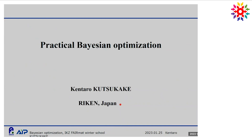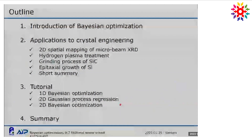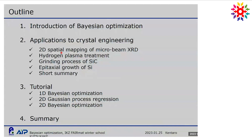Today, I'd like to talk about Bayesian optimization. For the past two days, the professor has explained Bayesian optimization very deeply. So today I'd like to focus on practical applications for actual experiments using actual experimental data. This is the content of my talk and the tutorial. After the introduction of Bayesian optimization, I'd like to share our application results for actual crystal growth experiments. After the lunch break, I'd like to run tutorials for Bayesian optimization.